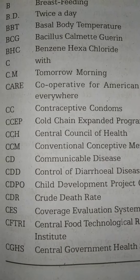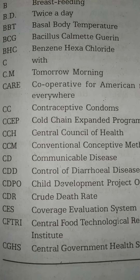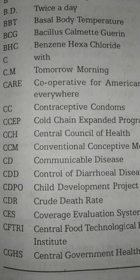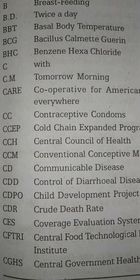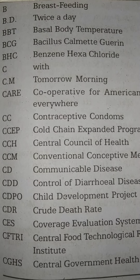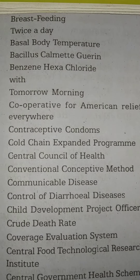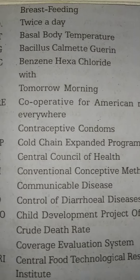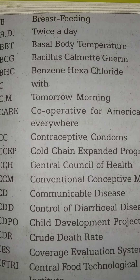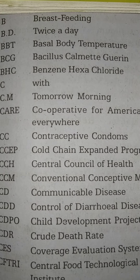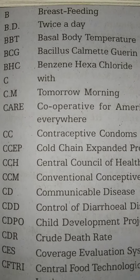C.C. stands for contraceptive counseling. C.C.E. stands for Cold Chain Expanded Program. C.C.H. stands for Central Council of Health. Additional abbreviations C.C.H.O.N. and C.C.H.S. are also noted.